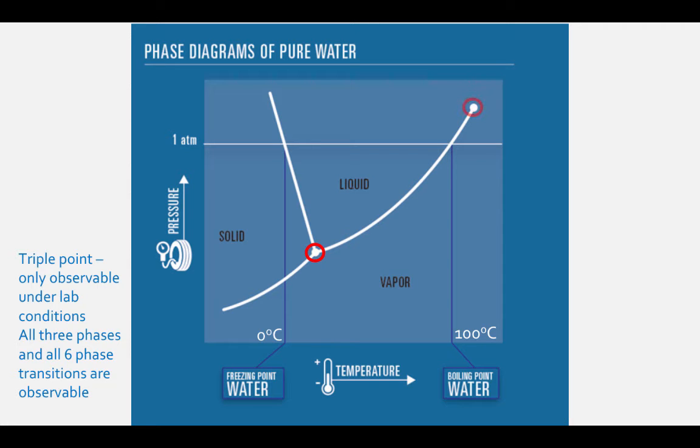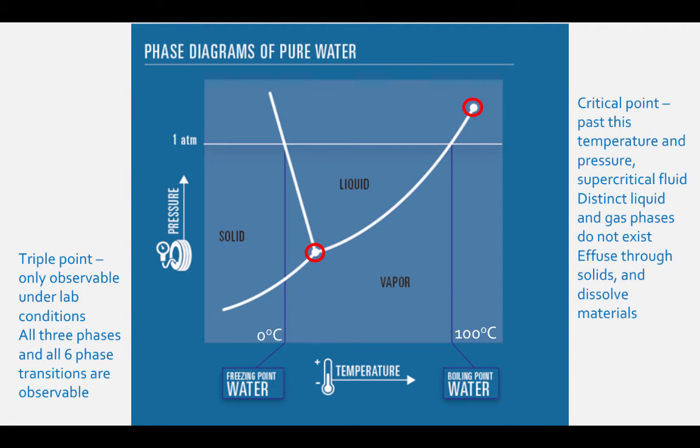Another point to notice on the phase diagram is the critical point. This point is at the end of the liquid-gas line. Past this temperature and pressure, the substance becomes a supercritical fluid. A supercritical fluid is where distinct liquid and gas phases do not exist. It can effuse through solids like a gas and dissolve materials like a liquid.